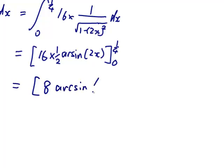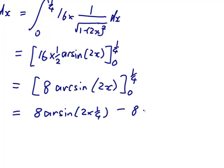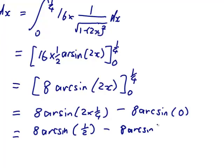8 arcsine 2x from 0 to a quarter. And so I get 8 arcsine of 2 times a quarter minus 8 arcsine of 0. And that's arcsine of 1 half.